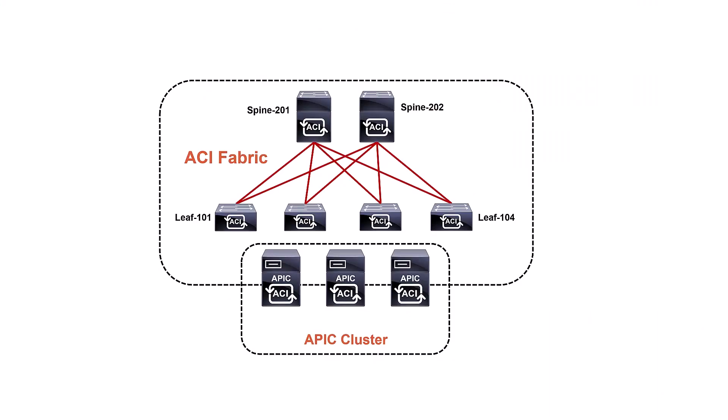Here we have our ACI setup: four leaf switches, a couple of spines connected together in a spine-and-leaf topology, and three APICs in a cluster. So what's going to happen when you're touching this ACI fabric for the first time, trying to configure it and get the APIC connected to the rest of the devices? Well, we're going to subdivide these steps into a series of different tasks.